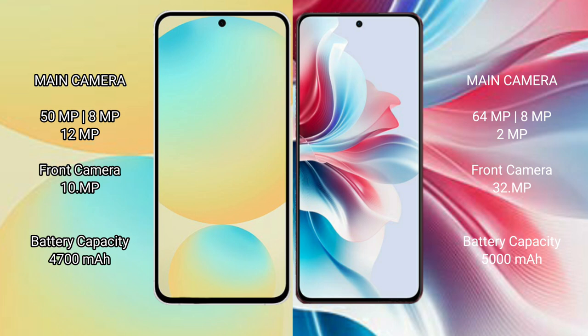Samsung Galaxy S24 FE has a 4400mAh battery with 25-watt fast charging support. Oppo F25 Pro has a 5000mAh battery with 67-watt fast charging support.